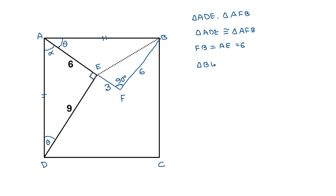Now focus on triangle BEF. From triangle BEF, as this angle is 90 degrees, according to the Pythagorean theorem we can write: BE² equals EF² plus FB², where BE is the hypotenuse. So BE² equals EF² plus FB². EF is 3 units and FB is 6 units.